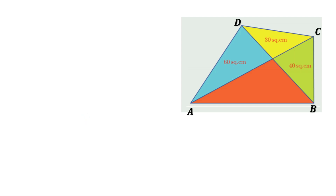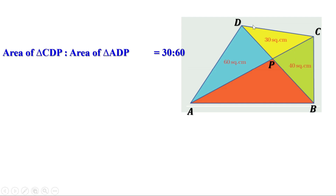Look at triangle ACD. DP is the line from vertex D to side AC. It divides the opposite side AC and the area of the triangle in the same ratio. The ratio between the areas of these two triangles equals the ratio between these two parts. The area of triangle CDP is 30 and the area of triangle ADP is 60, so the ratio is 30 to 60, which simplifies to 1 to 2.